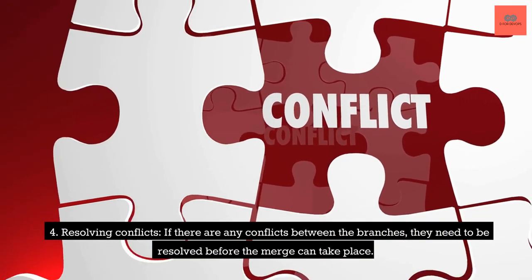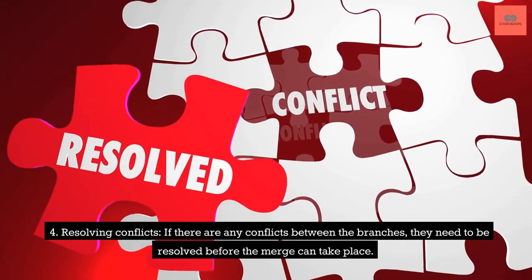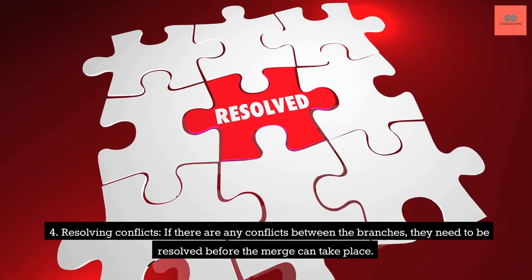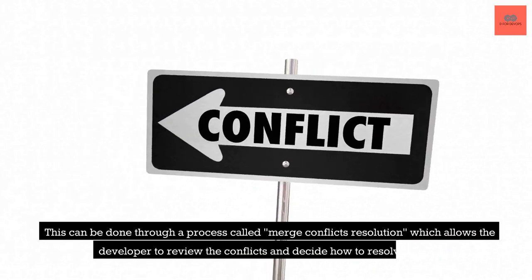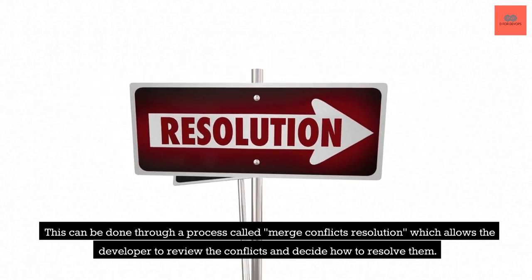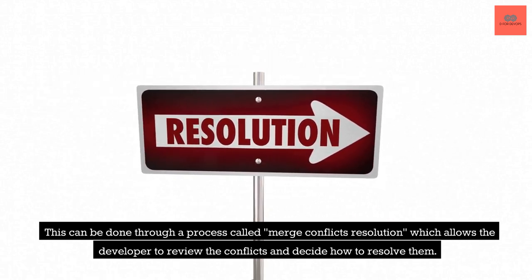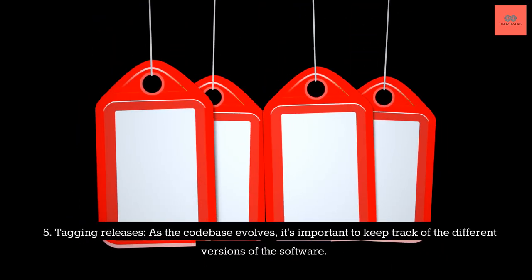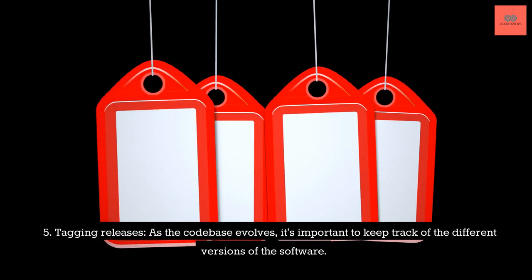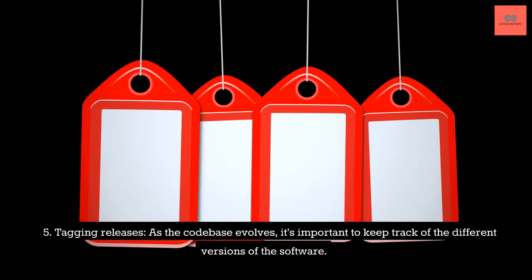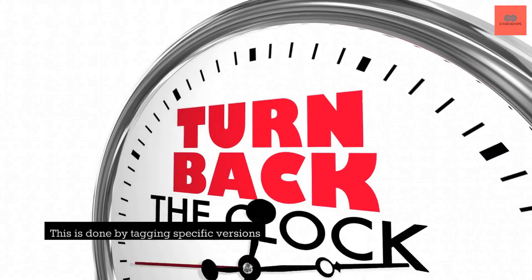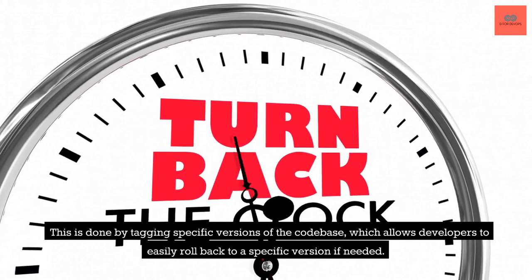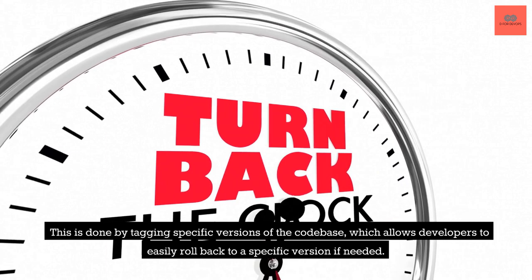Fourth, resolving conflicts. If there are any conflicts between the branches, they need to be resolved before the merge can take place. This can be done through a process called Merge Conflict Resolution, which allows the developer to review the conflicts and decide how to resolve them. Fifth, tagging releases. As the codebase evolves, it's important to keep track of the different versions of the software. This is done by tagging specific versions of the codebase, which allows developers to easily roll back to a specific version if needed.